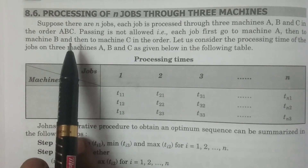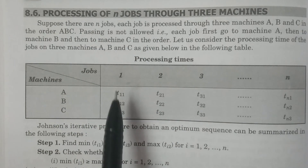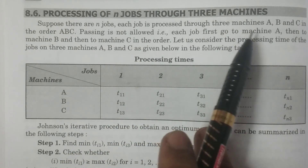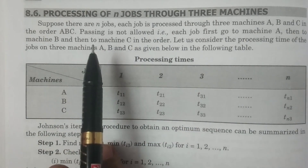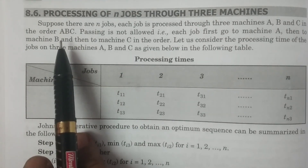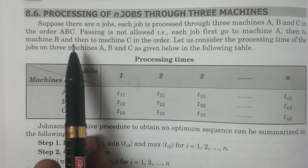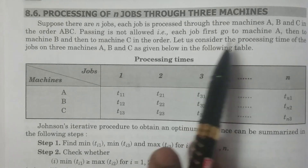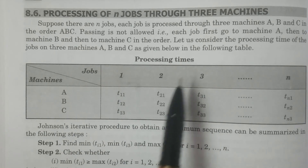Suppose that there are n jobs — for example, jobs one, two, three, and so on up to n. Each job is processed through machines A, B, C in the order A, B, C. For example, one particular job is to be processed through machine A first, then machine B second, and machine C third. Passing is not allowed, so each job goes to machine A, then B, then C in that particular order.